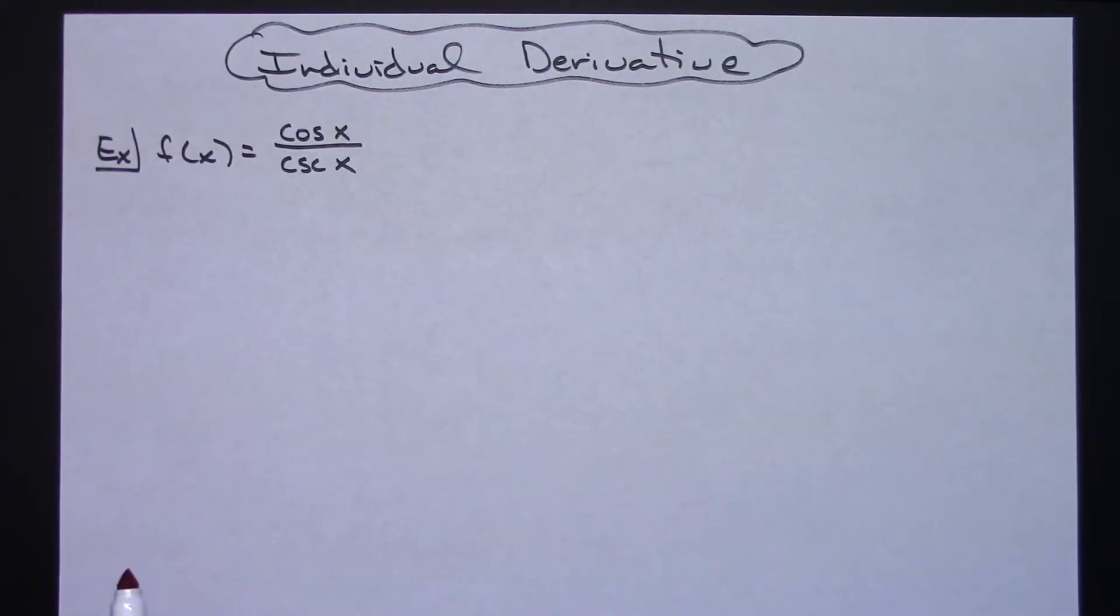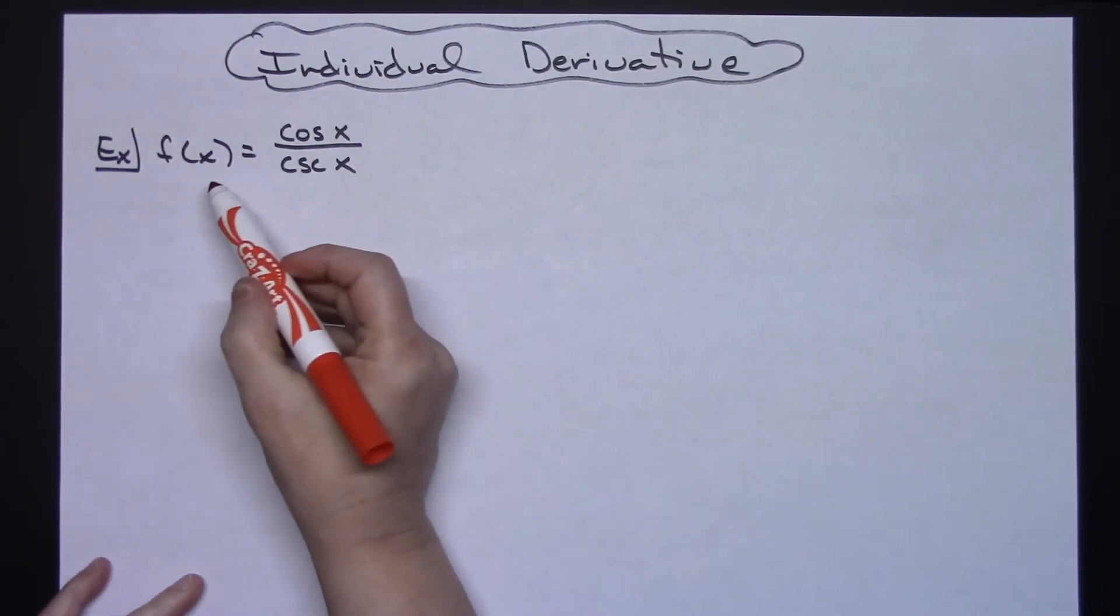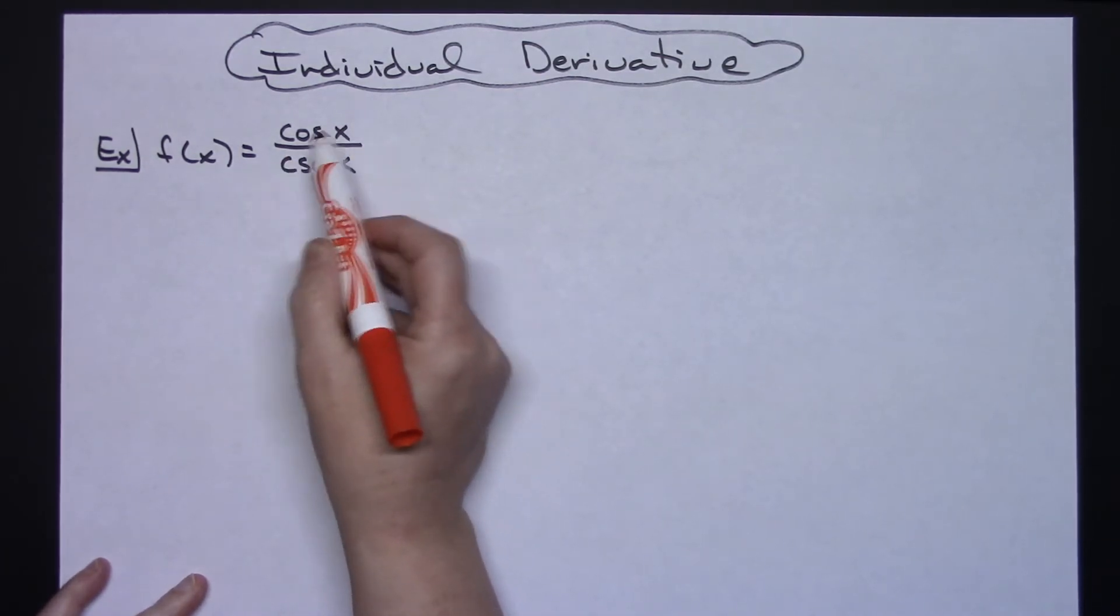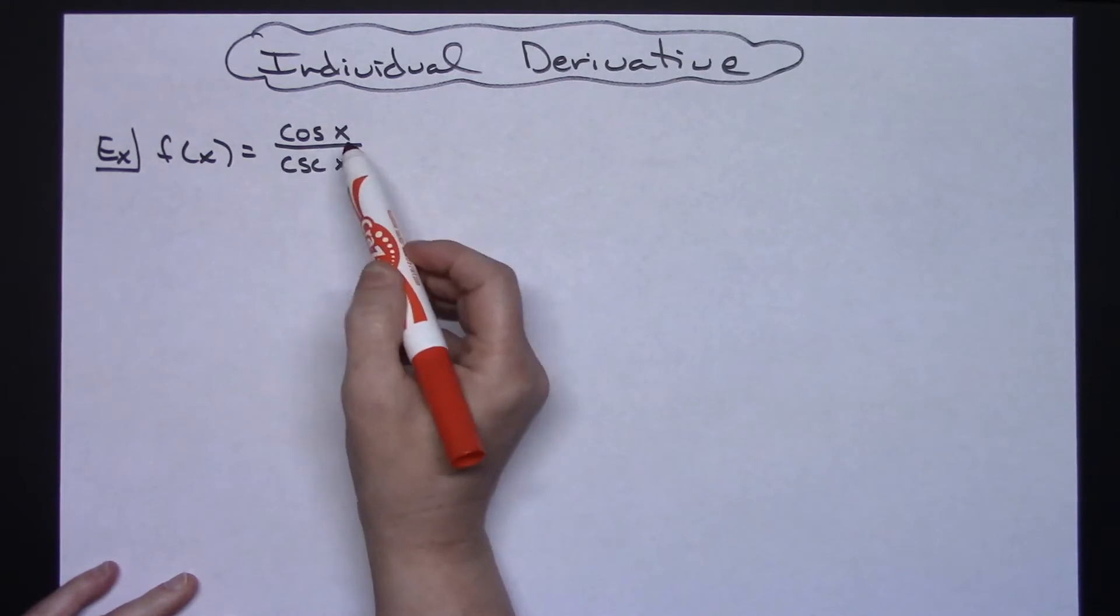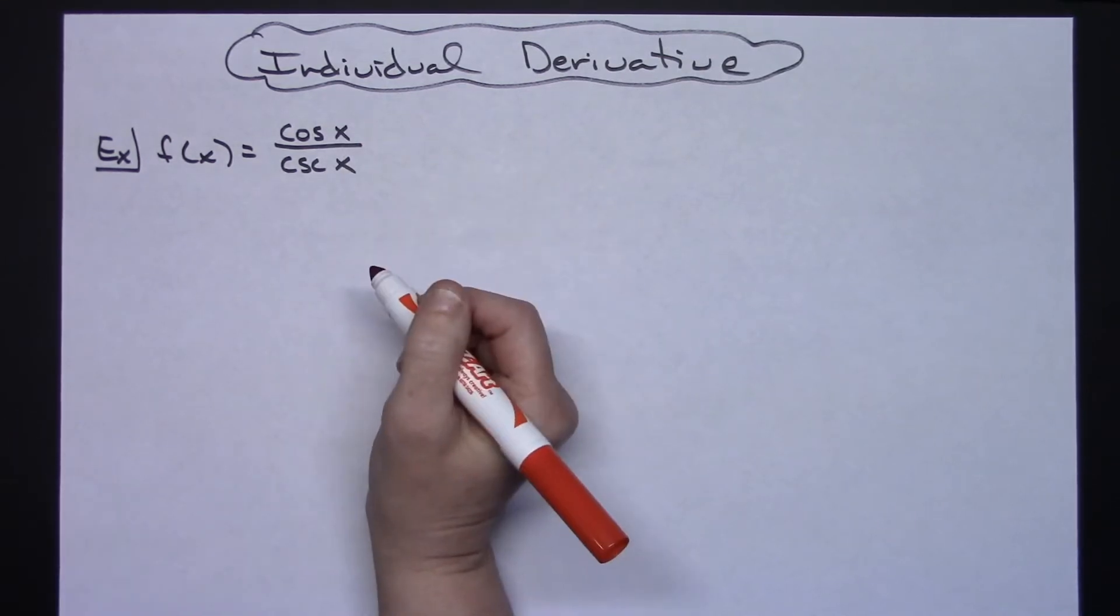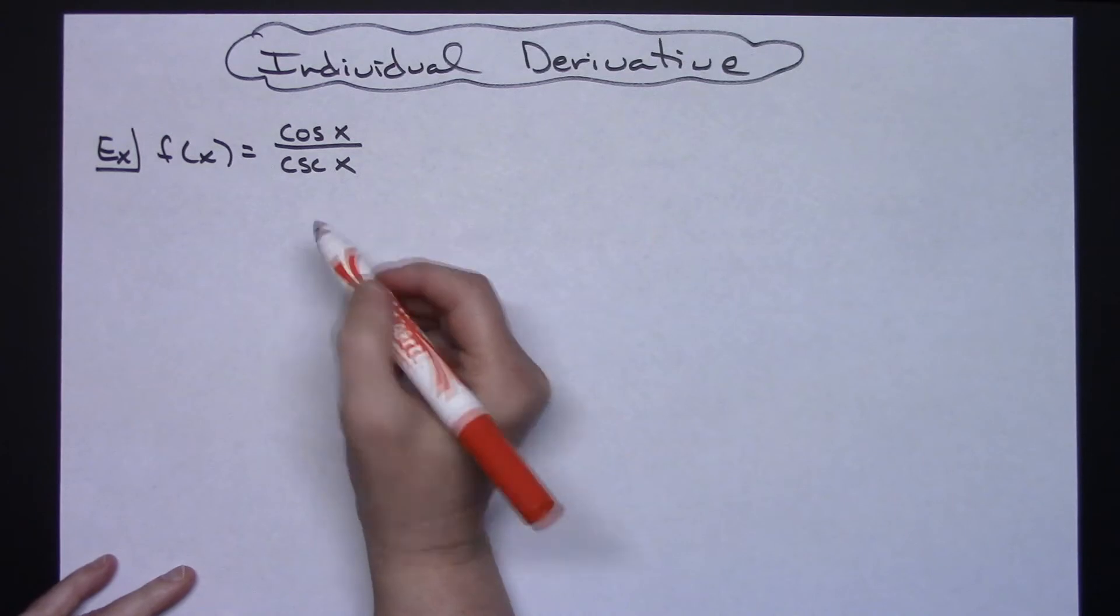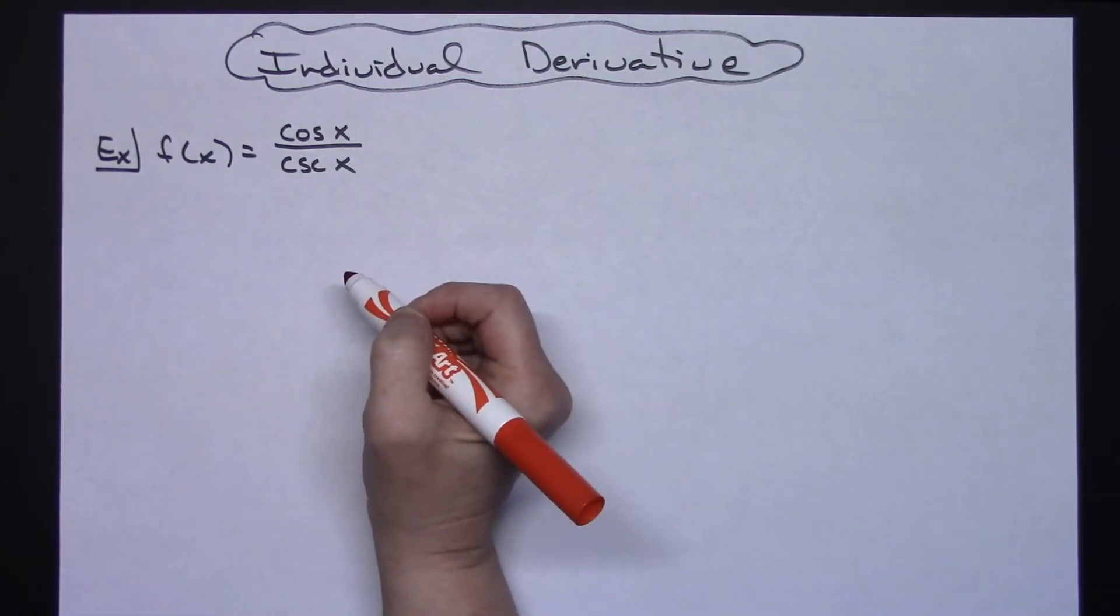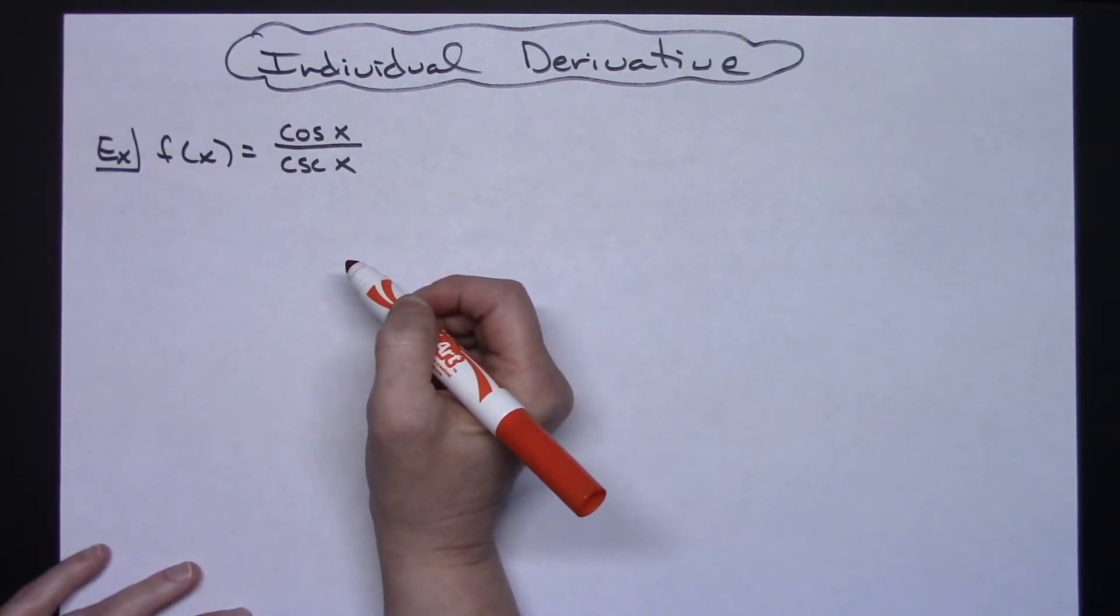In this video I'm going to be working out an individual derivative. We've got f(x) equals cosine x over cosecant x. You might initially look at this and think that's quotient rule, so I'm just going to do quotient rule. You could very definitely do quotient rule on this, but if there is a way to rewrite that original function so that it makes the derivative easier, then it's worth your while to attempt to do that.